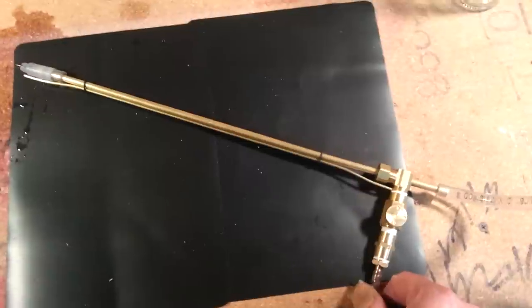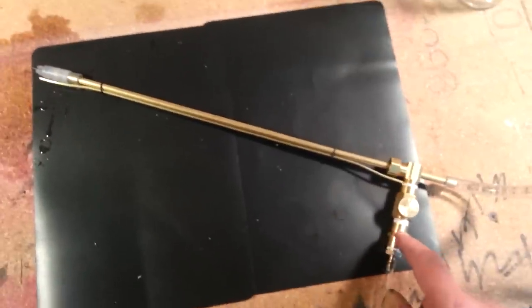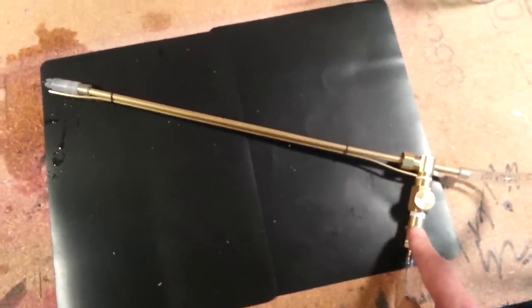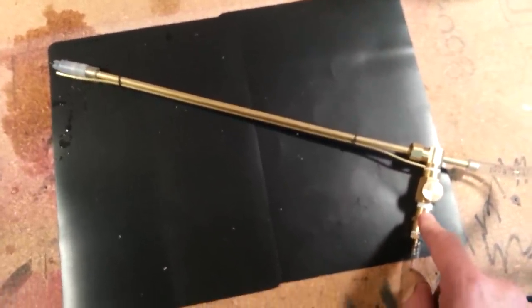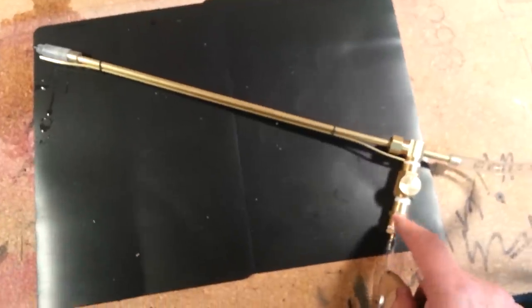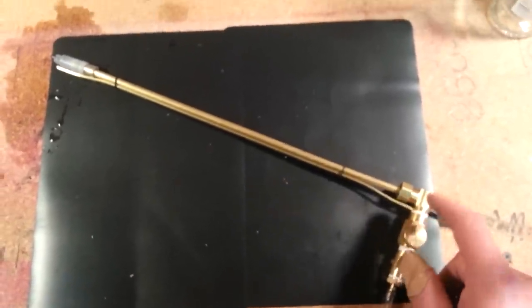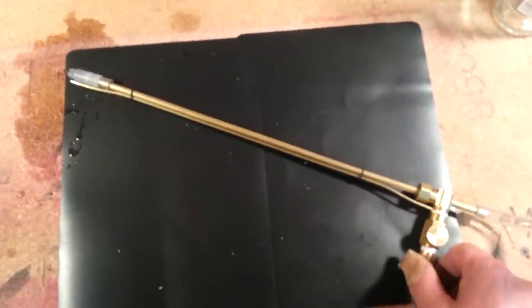I just thought I'd spend a few minutes and go over a DIY beer gun that I built. I built it for about $15. I just couldn't justify spending $75 on a Blichmann, considering it was just a ball valve and an elbow and some stainless steel tubing.